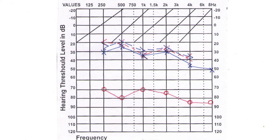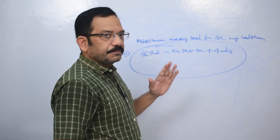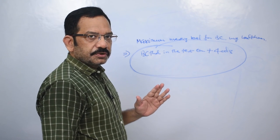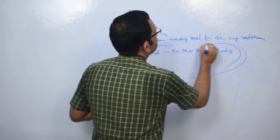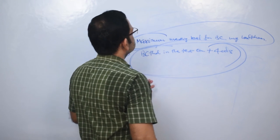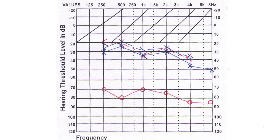35 dB is the bone conduction threshold at 1 kilohertz, 5 dB is the AB gap in the non-test ear (the left ear), and 10 dB is the occlusion effect for 1 kilohertz, giving a total of 50 dB as the minimum masking level. The maximum masking level for bone conduction testing is the bone conduction threshold in the test ear at a particular frequency plus 40 dB. In this audiogram, the maximum BC masking level at 1 kilohertz is 35 dB plus 40 dB, equal to 75 dB.